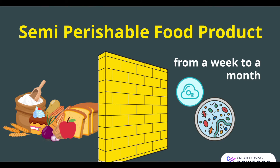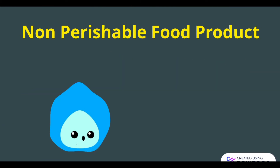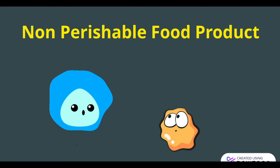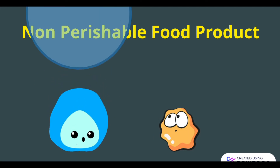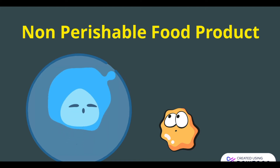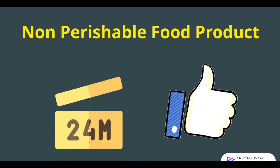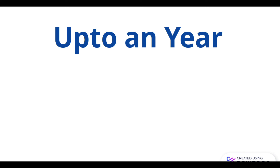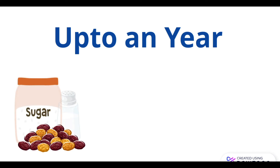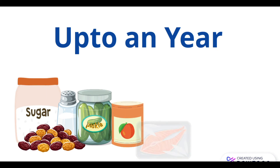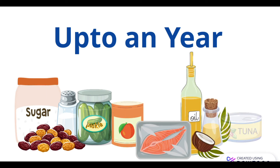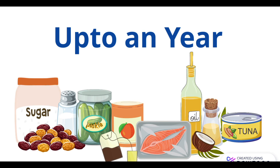We can store semi-perishable food products from a week to a month. Now, moving to the last type — non-perishable food products — which contain comparatively less amount of water that microorganisms can use for their growth. It may also provide a medium where, due to unavailability of water, microorganisms can't grow easily. Under this type, foods can be processed or can have a higher sugar concentration. This includes sugar, oil, pickles, canned fruits, canned meat, canned vegetables, olive oil, coconut oil, rice, salt, frozen and dried fruit, frozen meat, coffee, tea, etc.